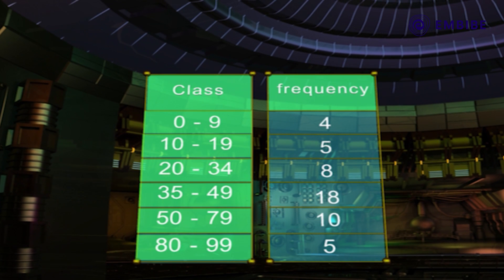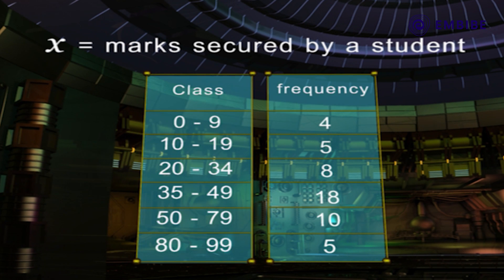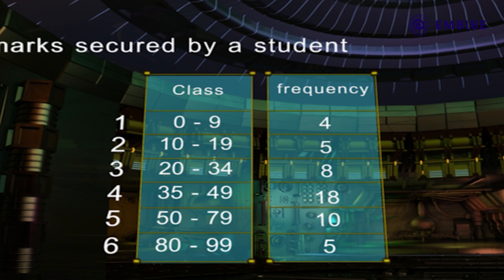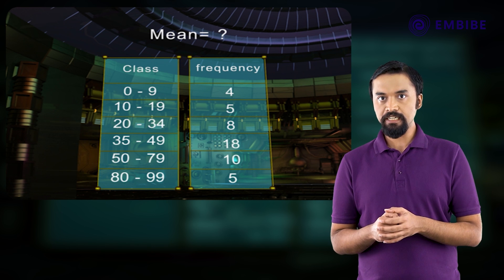Now here, the variable characteristic X of the group data denotes the mark secured by a student. The number of classes K is equal to 6. In order to compute the mean of the data, we shall have to compute the mid-value of each class.